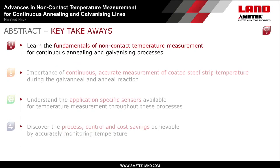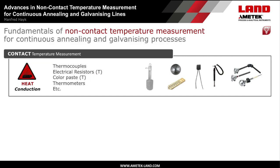Let's start with the fundamentals of non-contact temperature measurement for continuous annealing and galvanizing processes. For industrial temperature measurements there are two main physical methods available. In many furnace applications, industrial thermocouples are used to measure the furnace atmosphere temperature continuously. Typically, these thermocouples are mounted at the furnace outside wall and measure into the furnace atmosphere. All these thermocouple measurements are based on contact temperature measurement and by heat conduction.